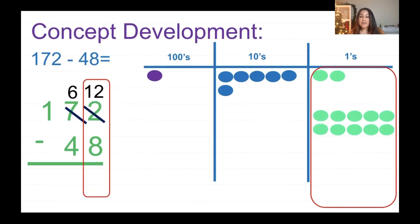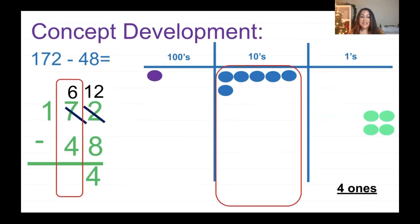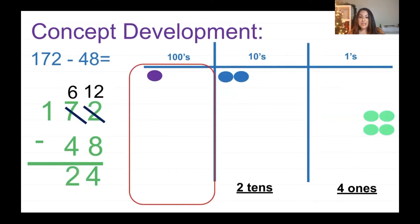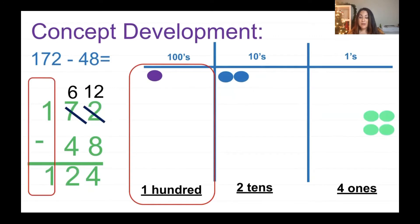When I have 12 ones and I take away 8, that leaves me with 4 ones. Now let's move on to the tens. I now have 6 tens and I'm going to take away 4 — there go those tens. How many do I have left? Two tens. And now let's focus on our hundreds: I have 1 hundred, take away none, so I'm left with 1 hundred.